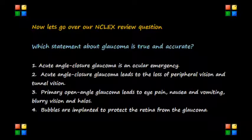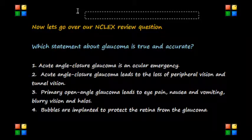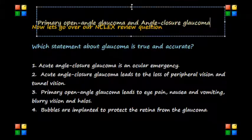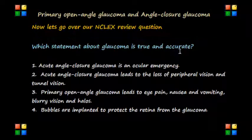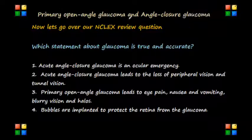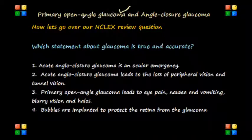Now in a healthy eye, excess fluid leaves the eye through the drainage angle, which keeps the pressure stable all throughout. Now there are two types of glaucoma: primary open angle glaucoma and angle closure glaucoma, also called closed angle glaucoma. Primary open angle glaucoma is the most common type. It happens gradually where the eye does not drain fluid as well as it should, and as a result eye pressure builds and starts to damage the optic nerve. But this type of glaucoma is painless and causes no vision changes at first.